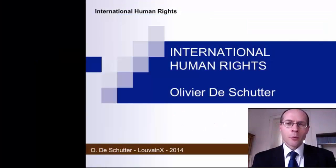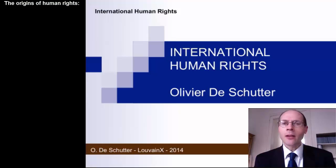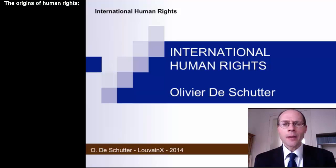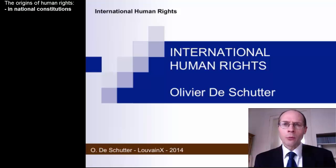The story of human rights does not begin with the adoption on 26th of June 1945 of the United Nations Charter. The story of human rights really began with the Enlightenment period. Those familiar with the history of the French Revolution in 1789, or with the history of the independence of the United States declared in 1776, the adoption of the Federal Constitution in 1787, and the Bill of Rights appended to it in 1791, will know that human rights were very much at the center of these revolutionary processes.